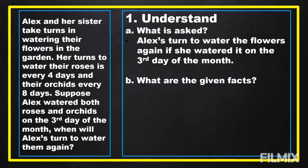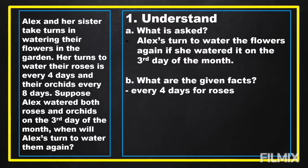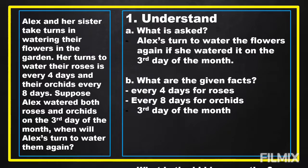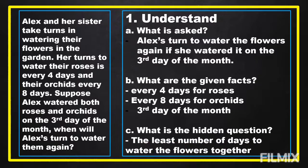In order for us to get the answer to our problem, first we're going to understand. We should know what is asked. In our problem, it is asking for Alex's turn to water the flowers again, given she watered them on the third day of the month. The given facts are: every 4 days for roses, every 8 days for orchids, and the third day of the month she watered them together. We also have a hidden question: what is the least number of days to water the flowers together?